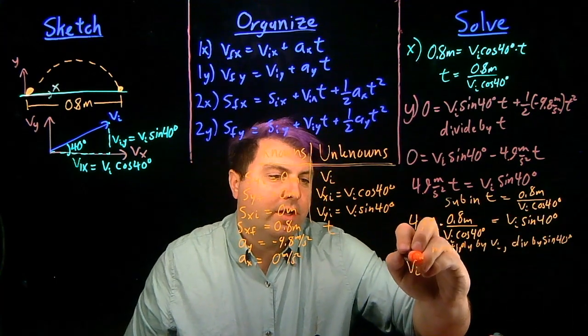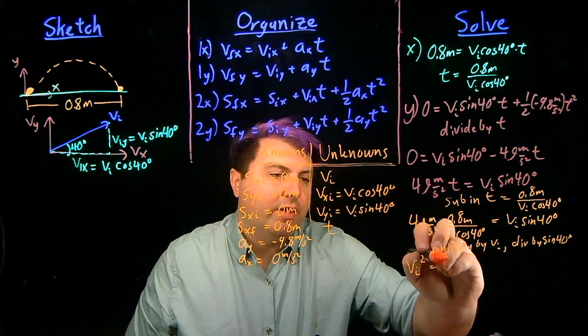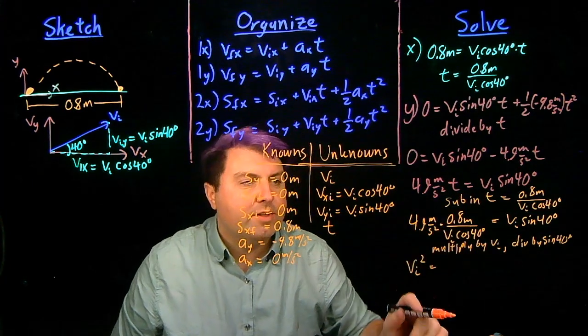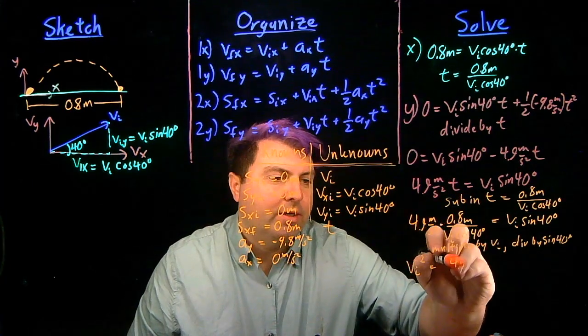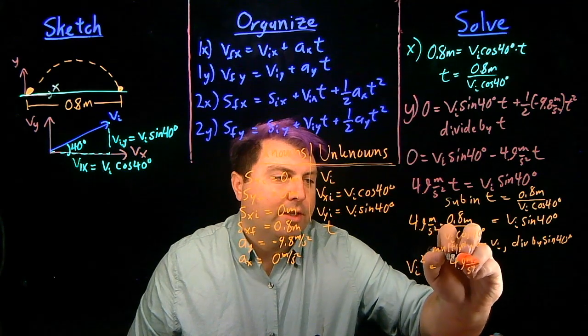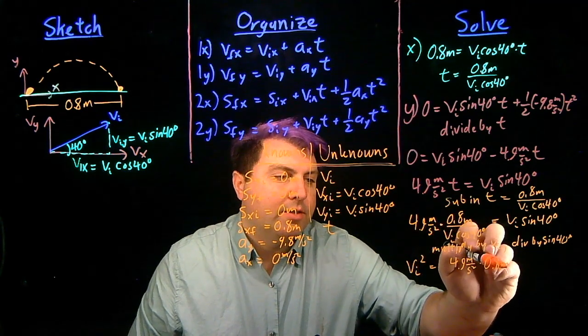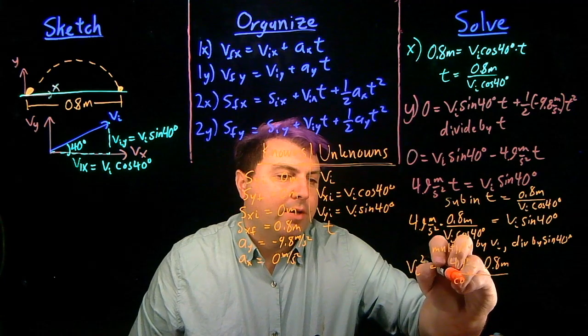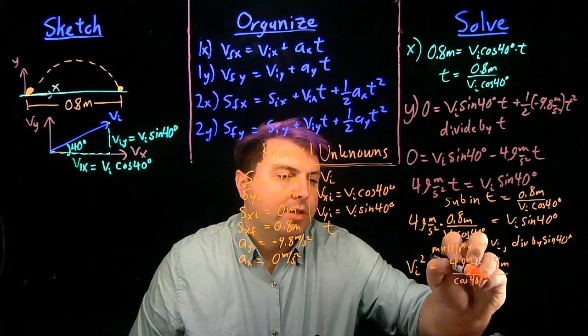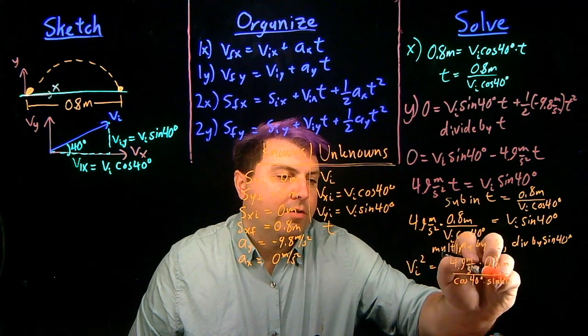If we do that, we're going to get vi squared, vi times vi, and then it's going to be all of these other things here. So we have 4.9 meters per second squared times 0.8 meters, and then we're dividing by cosine of 40 degrees times sine of 40 degrees.